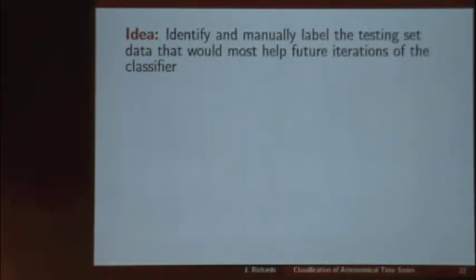The method we determined works best for trying to overcome these effects of sample selection bias is active learning. Active learning has come up a few times in this conference — the basic idea is to try to figure out the objects that, if you had their true label, would best help your classifier in subsequent iterations. The key in astronomy is that we often do have the ability to selectively follow up sources. We have a fixed amount of telescope time we can use to actually get labels, making active learning a very viable option for these types of studies.